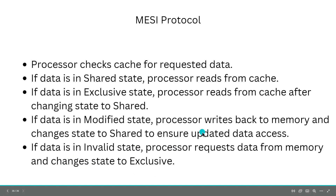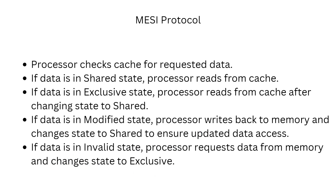Overall, the MESI protocol ensures that all caches in a multiprocessor system have consistent data by maintaining the state of each cache line. When a processor modifies data, it ensures that the data is written back to memory and that other processors have access to the most up-to-date data. This improves the performance and reliability of the multiprocessor system.